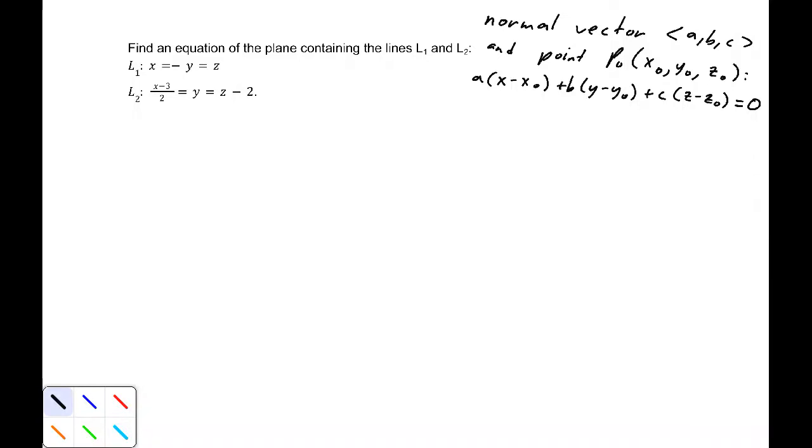Find an equation of the plane containing the lines L1 and L2, given by L1 equals x equals negative y equals z, and L2 is defined as x minus 3 over 2 equals y equals z minus 2.